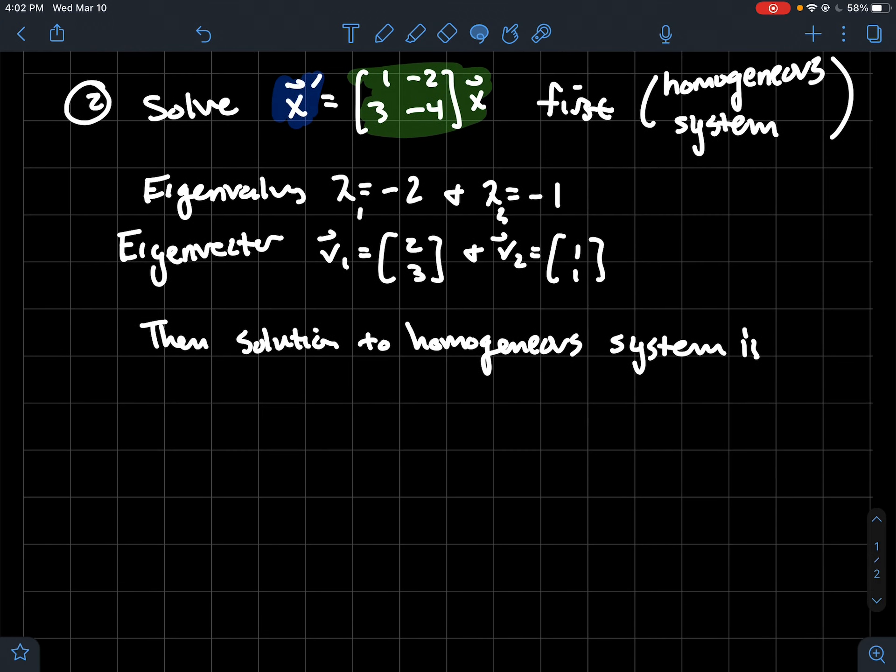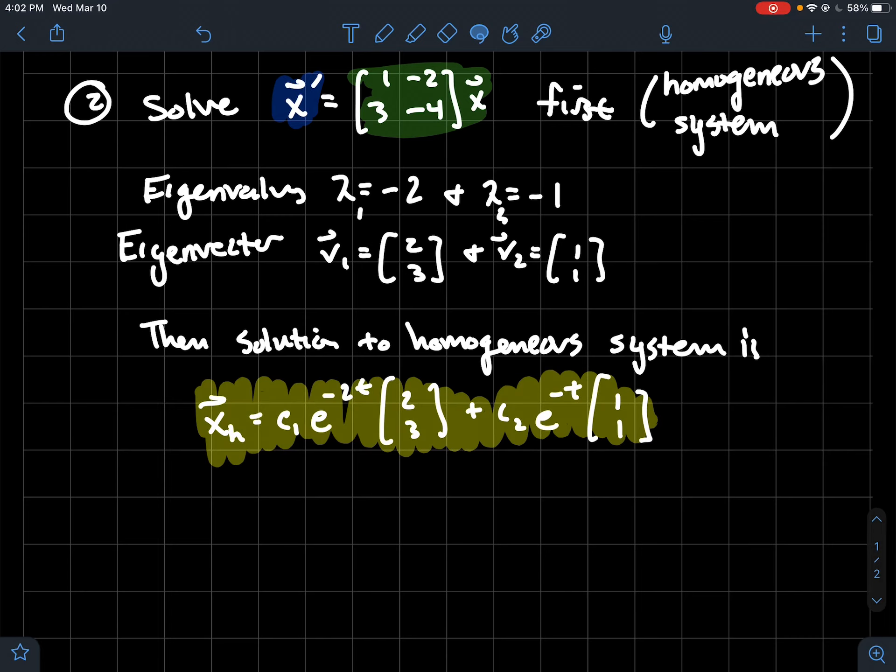The solution to the homogeneous system, to denote that it's for the homogeneous system without the orange blue, I'm going to call it x sub h. There's a little subscript of an h there, you guessed it, stands for homogeneous. But what is it? It's some constant c1 times e to the minus 2t, remember that minus 2 is my first eigenvalue, times the corresponding eigenvector two three.